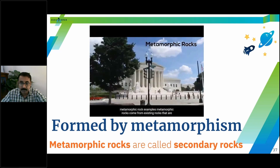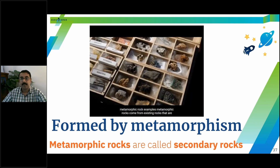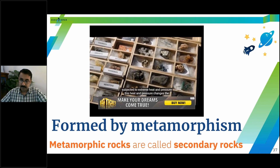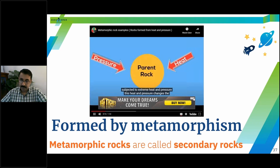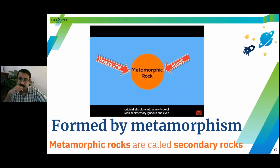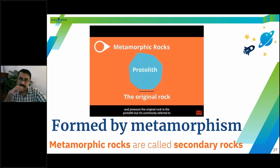Metamorphic rocks come from existing rocks that are subjected to extreme heat and pressure. This heat and pressure changes the original structure into a new type of rock. Sedimentary, igneous, and even metamorphic rocks can all become metamorphic rocks when exposed to heat and pressure. The original rock is called the protolith, but is commonly referred to as the parent rock. Metamorphic rocks can form deep in the Earth's crust.